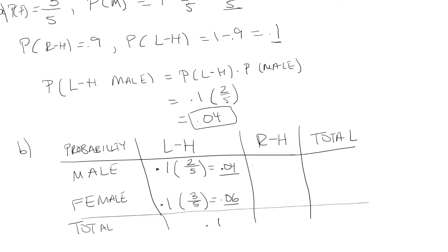Now for right-handed. The probability a person is left-handed is 0.1, so the probability that a person is right-handed is 0.9. And the probability a person is male is two-fifths. So that would be 0.36.